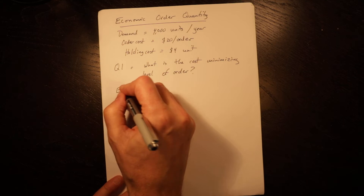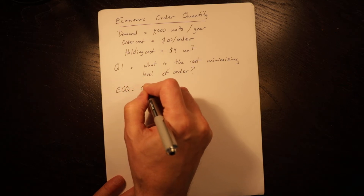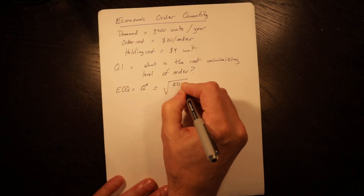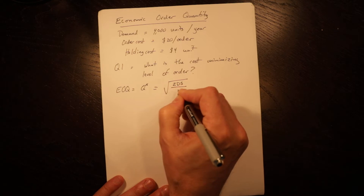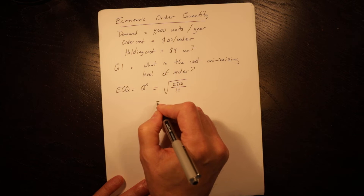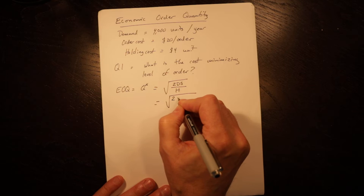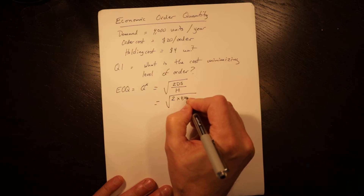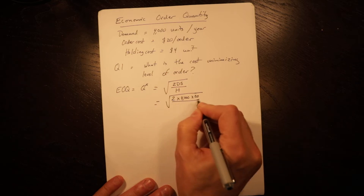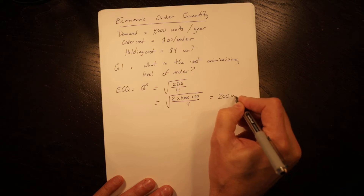The EOQ, Q*, is equal to the square root of 2 times demand times the setup cost divided by holding cost. In this case, it is equal to the square root of 2 times 4,000 (annual demand) times 20 (setup cost) divided by 4 (holding cost), which equals 200 units.